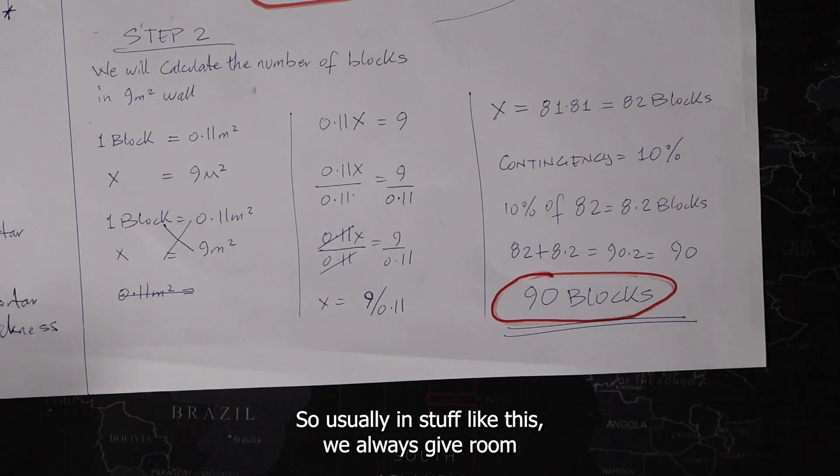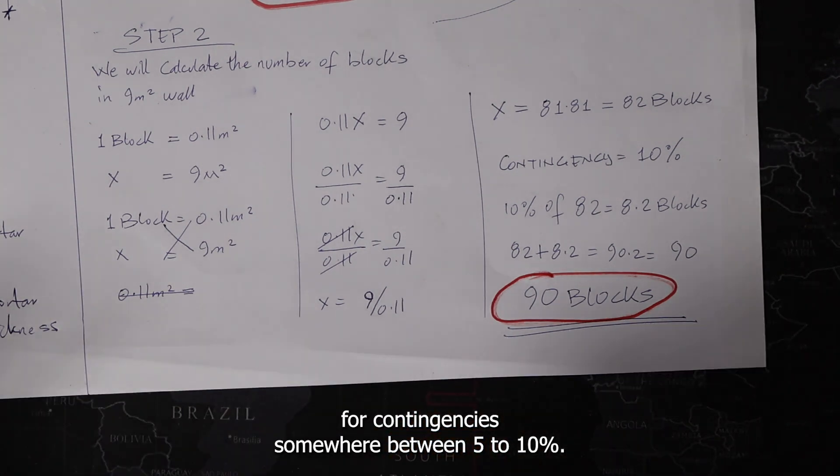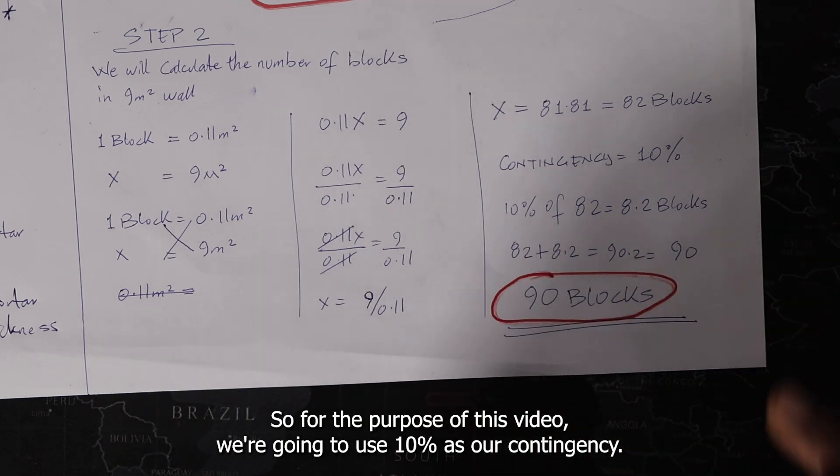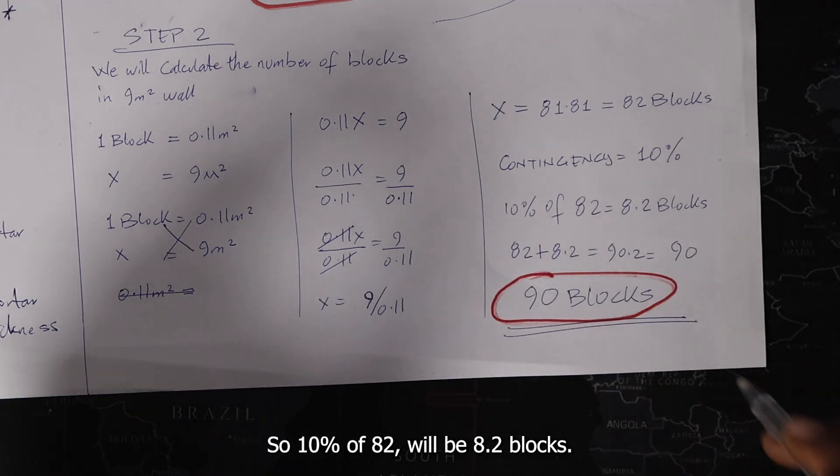So usually in stuff like this, we always give room for contingencies somewhere between 5 to 10%. So for the purpose of this video, we're going to use 10% as our contingency. So 10% of 82 will be 8.2 blocks.